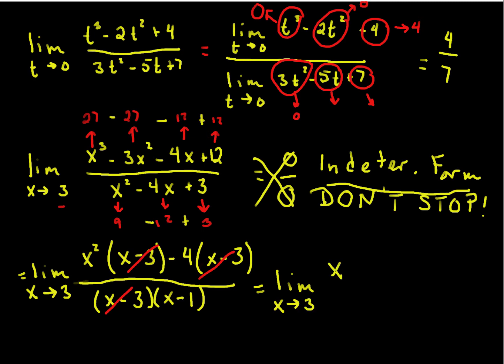So, this is the limit as x approaches 3 of x squared minus 4, and on the bottom, I have x minus 1. So, let's try it again.